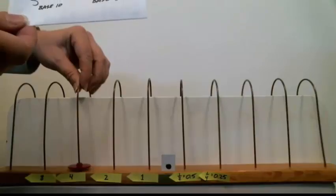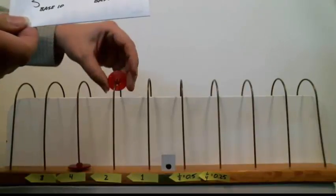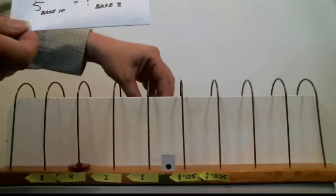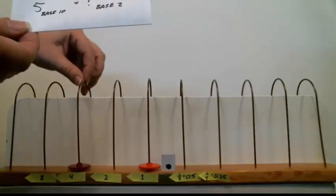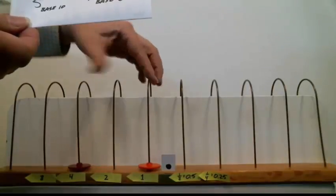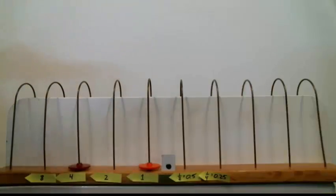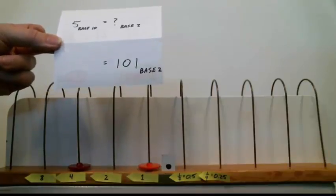So there's 1 on the 4s wire, 1 on the 1s wire. That adds up to 5, and that's the number I'm trying to represent. And if we look at that in base 2, it turns out that 5 in base 10 can be expressed as 1, 0, 1 in base 2.